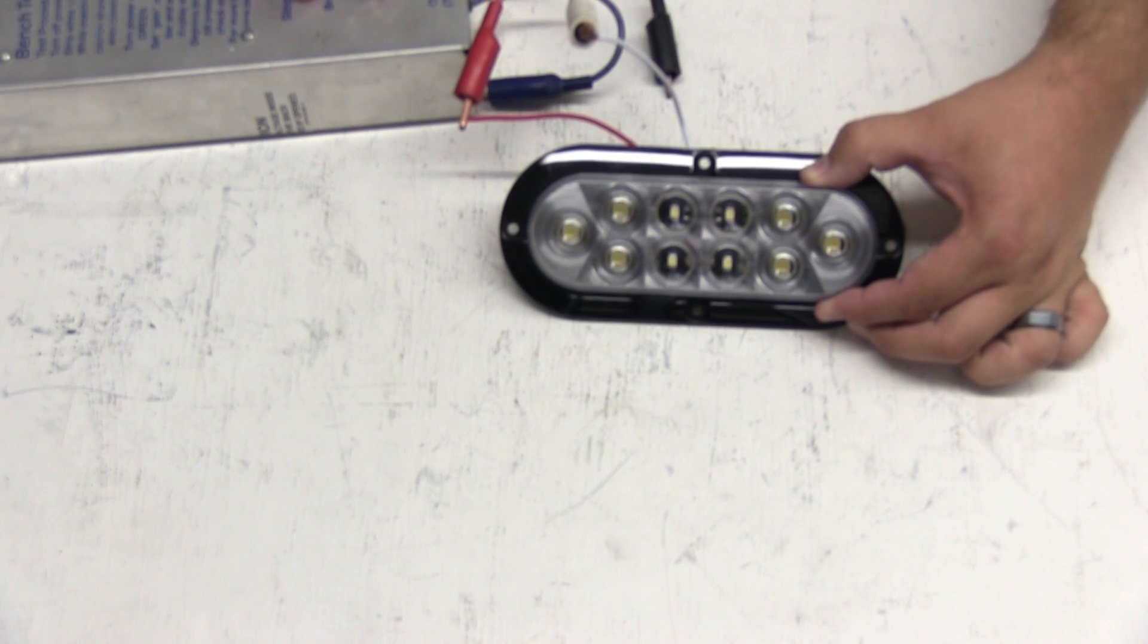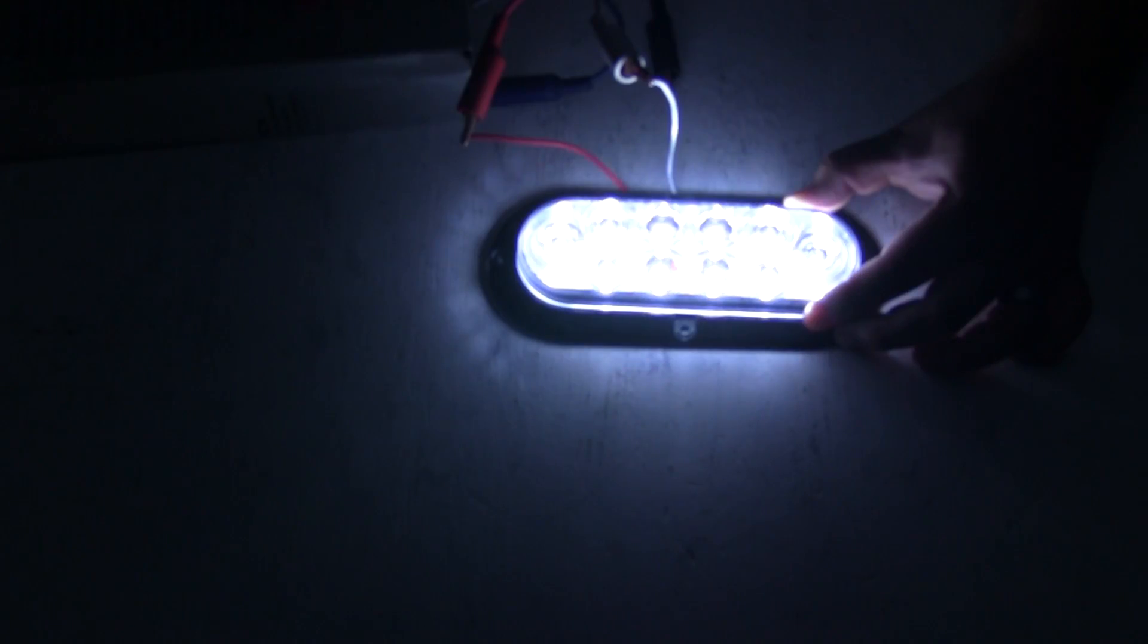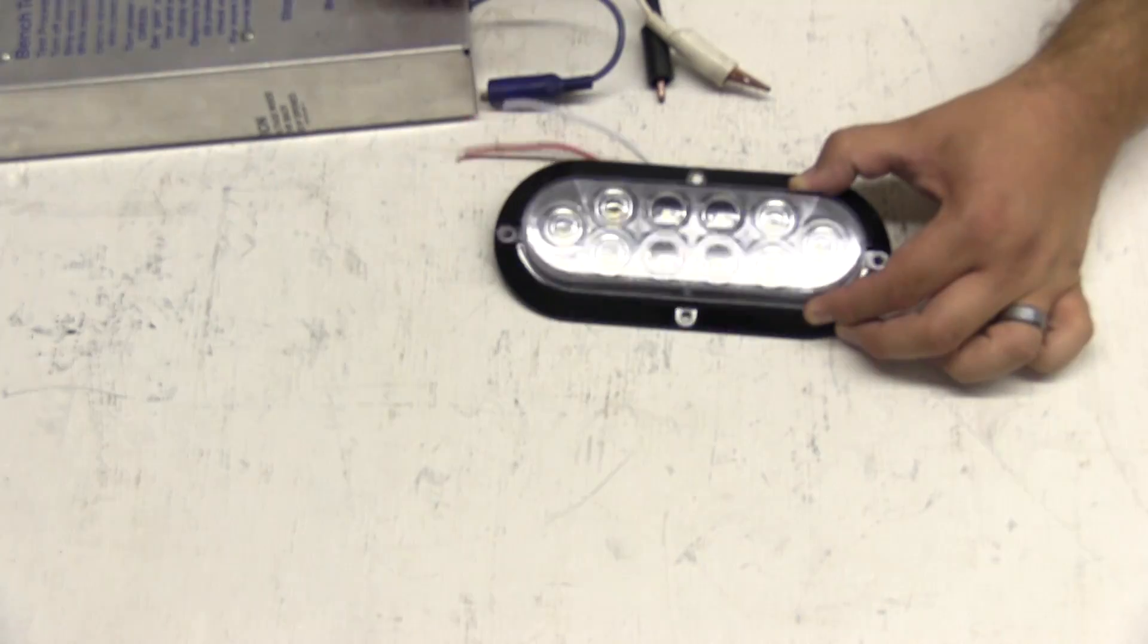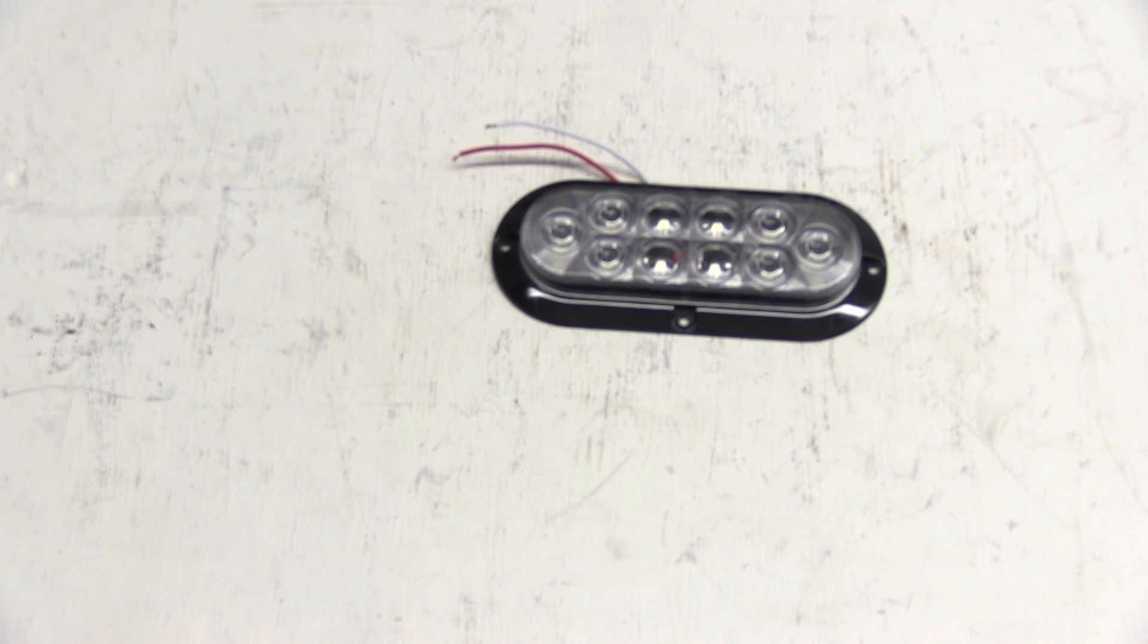Next we'll turn off the overhead lights so you can see how bright the light is. And that does it for Optronix's sealed 6.5 inch oval LED trailer utility light, part number BUL78CB.